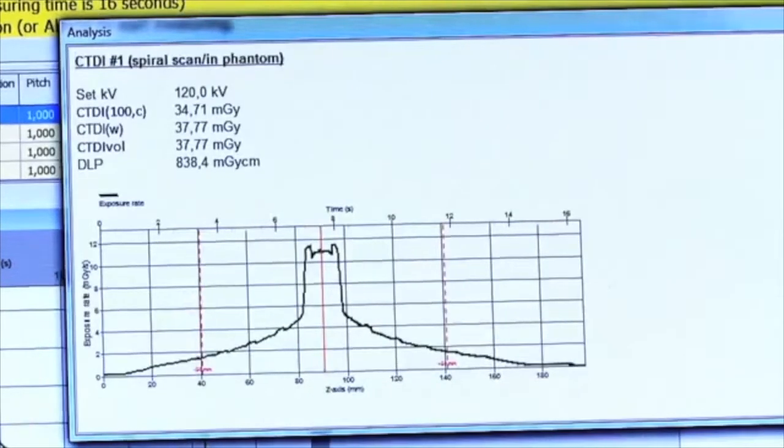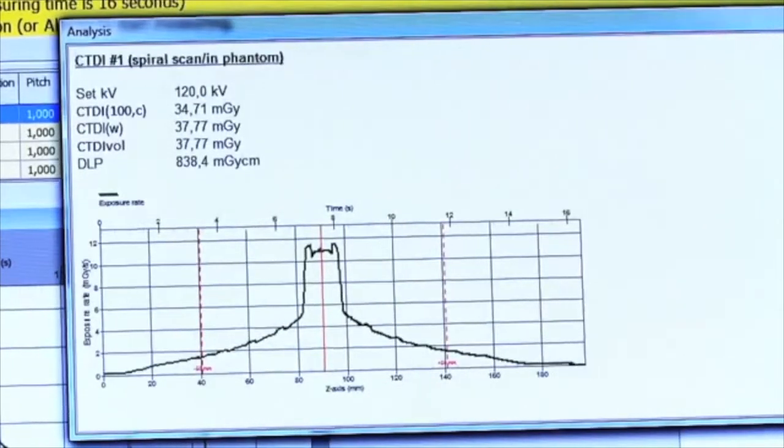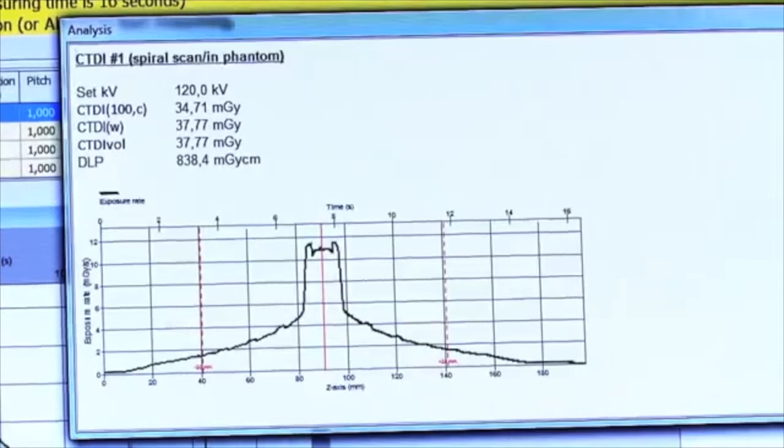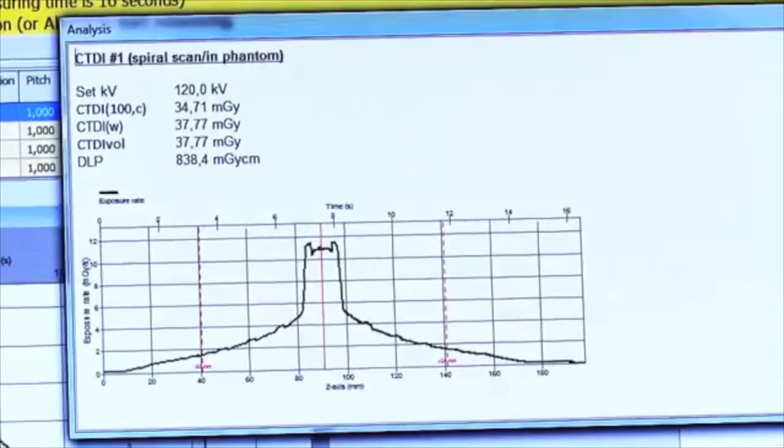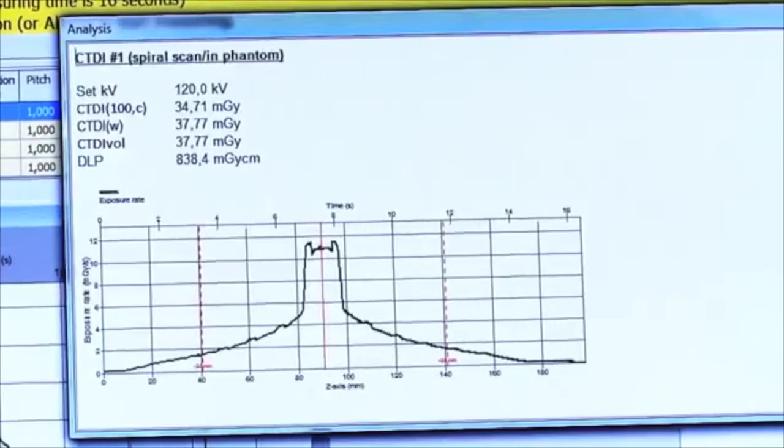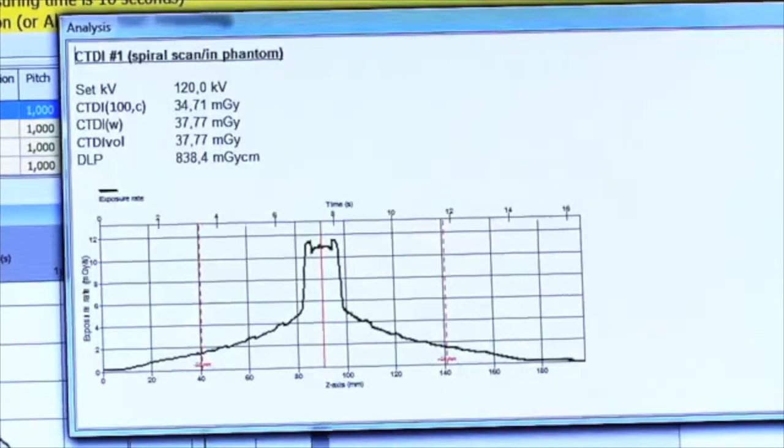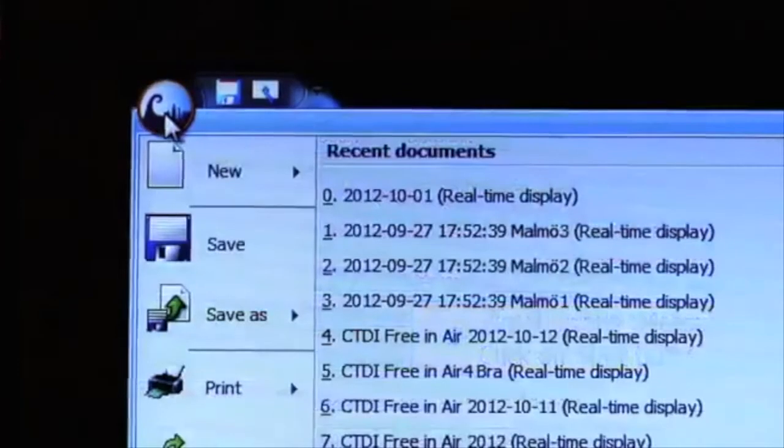You can see a clear view of the dose profile. The dose between the two red lines is the CT dose index 100. You can see the attenuation in the neck support at the top of the dose profile. Save the data.